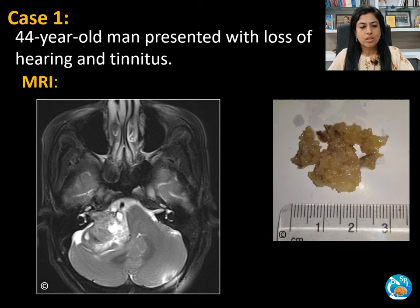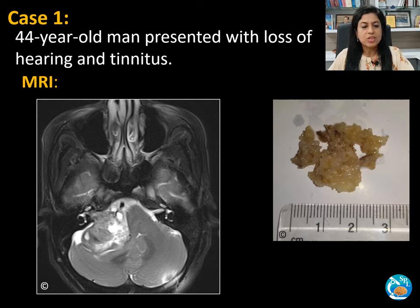MRI revealed a lobulated solid cystic extra-axial mass in the right cerebellopontine angle cistern extending into the right internal auditory canal. This is a T2-weighted axial image. This is the gross of the tissue — the tumor which was excised and sent.